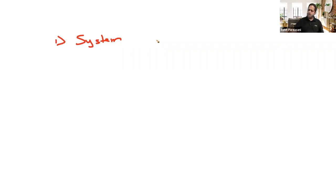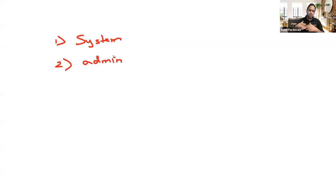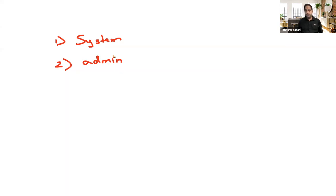There's one more context which is built-in: the system context does not count in your licensing. There's one more context which is mandatory: the admin context. Admin context is the default name Cisco has given — it's lowercase 'admin'. Admin context is a mandatory requirement; you need it before you can create virtual firewalls.